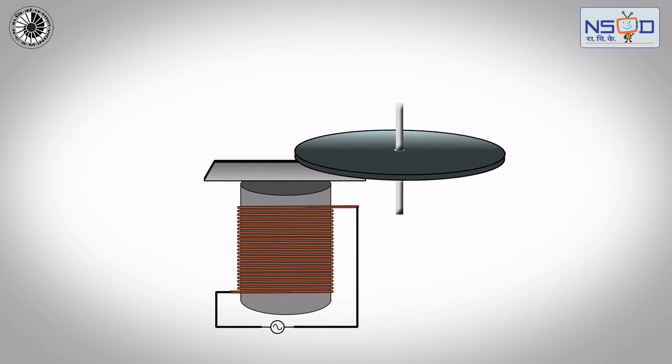Two eddy currents with delay are produced in the disc, one by the electromagnet and the other by the eddy currents in the sheet. These two opposite currents produce a torque, causing rotation of the disc.